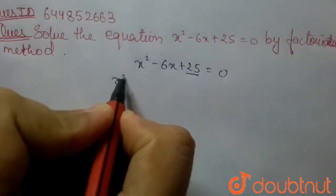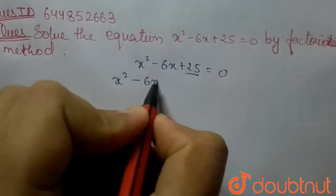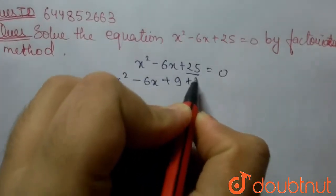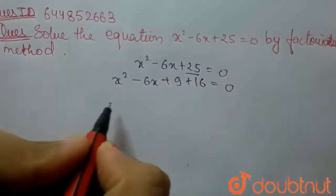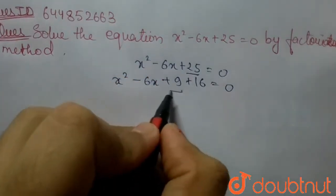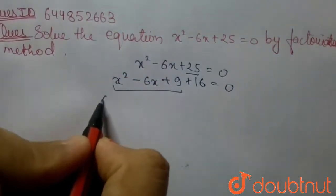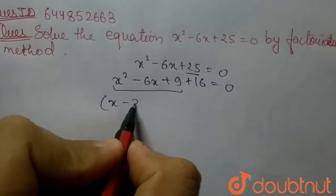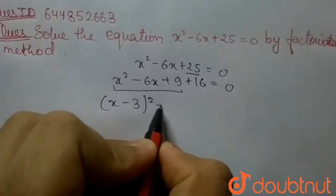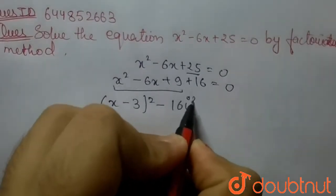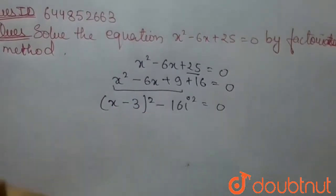So we can write it as x² - 6x + 9 + 16 = 0, and we can see that we can write it as (x - 3)² - 16i², because we know that the value of i² is -1.